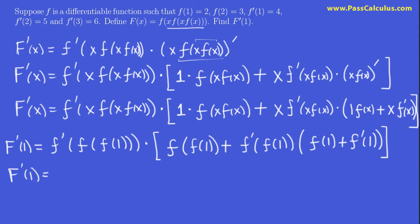Let's try to put in some values — we're given all this information. What is f of 1? f of 1 is 2. So this value is really just 2, which means we now need f of 2. And what is f of 2? It's 3. And what is f prime of 3? f prime of 3 is 6. So this entire first term works out to 6. That's because: f of 1 is 2, f of 2 is 3, and f prime of 3 is 6.